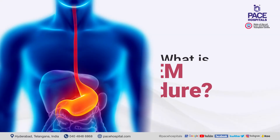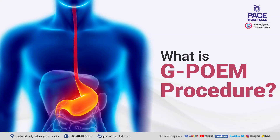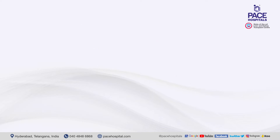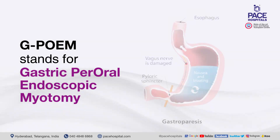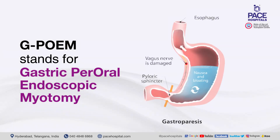What is the G-POEM procedure? G-POEM stands for Gastric Per-Oral Endoscopic Myotomy. Gastric POEM is used for the treatment of refractory gastroparesis. This new technique is similar to the POEM procedure.